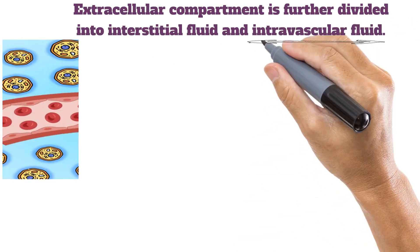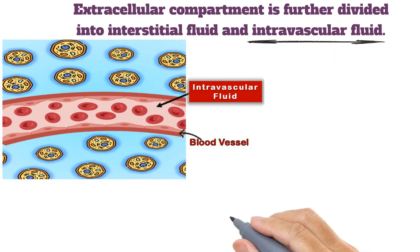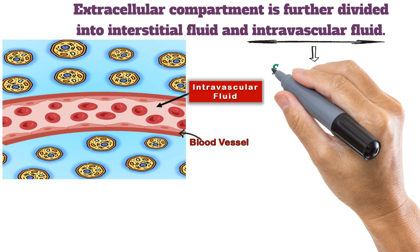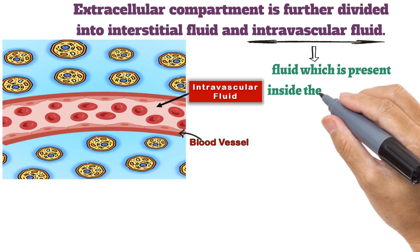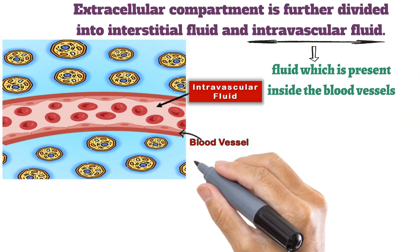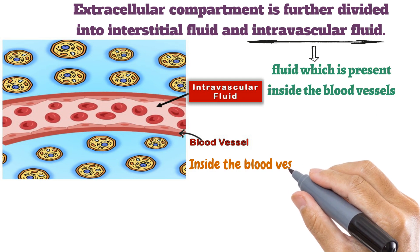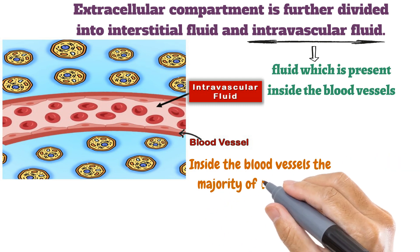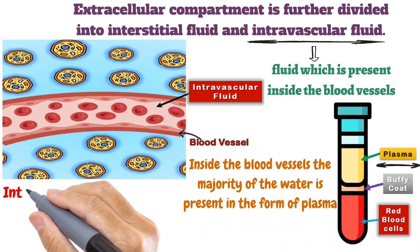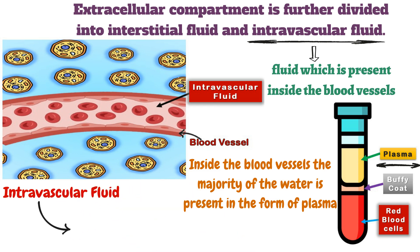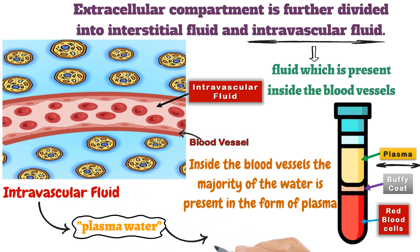You are already familiar with the intravascular fluid, which basically means the fluid which is present inside the blood vessels. Inside the blood vessels, the majority of the water is present in the form of plasma. So when we talk about intravascular fluid, we are basically dealing with plasma water, which is around 4%.